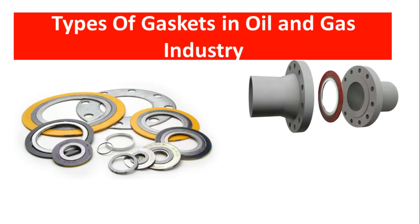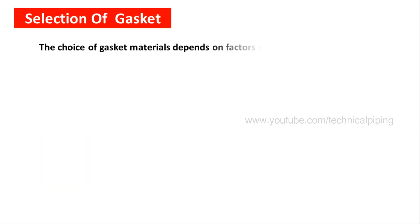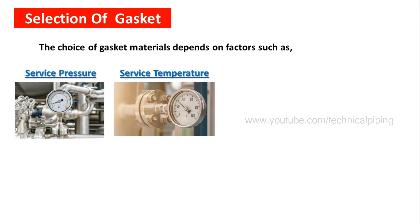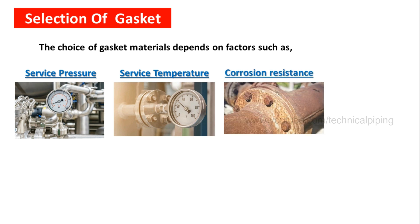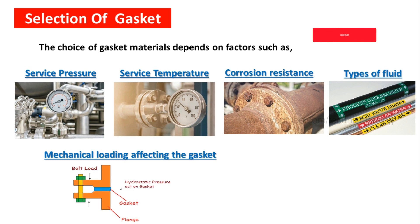This video explains the types of gaskets used in the oil and gas industry in piping. A gasket is a sealing material placed between connecting flanges to create a static seal, which will maintain leakage-proof sealing in all operating conditions. The choice of gasket materials depends on factors such as service pressure, service temperature, corrosion resistance, types of fluids, mechanical loading affecting the gasket, and cost.